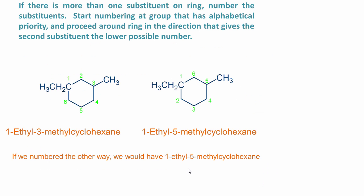If there is more than one substituent on the ring, we need to number the carbons. We start numbering at the group that has alphabetical priority, and then proceed around the ring in the direction that gives the second substituent the lowest possible number.